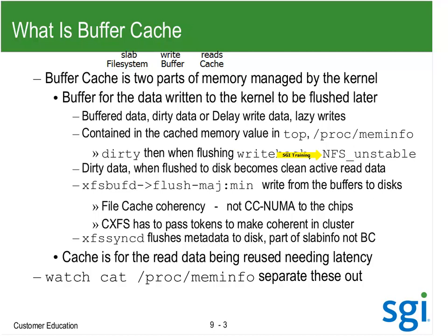If that server is real slow, you might see writebacks back up quite high. Dirty data when flushed to disk becomes coherent or clean. Once the flush is done, it is not released from memory - it still stays in memory. The only thing that's going to get something out of memory right now is either a memory demand forcing the cache to be trimmed, a bcfree, or removing the file.